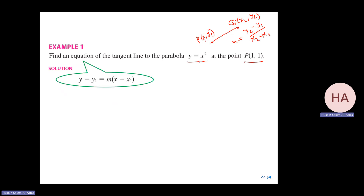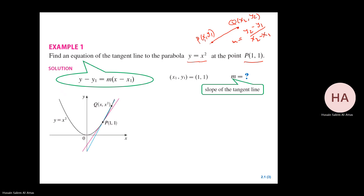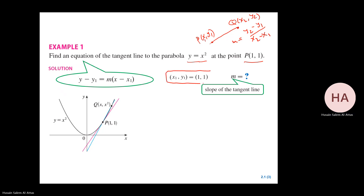So what you have exactly is this graph. We need to find the equation of this red line. You have the function y = x². We have the point (1,1), and the red line is the tangent line. So we have a point, but we don't have the slope. We can apply the equation of a line if we know the slope and the point.